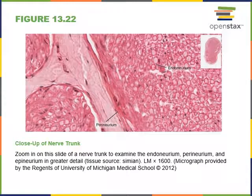A micrograph of the layers of a spinal nerve shows the perineurium surrounding a fascicle, with numerous fibers inside each fascicle surrounded by endoneurium. An outermost layer of fibrous connective tissue—the epineurium—surrounds the entire nerve. The three layers are: endoneurium around individual fibers, perineurium around fascicles, and epineurium around the entire nerve.